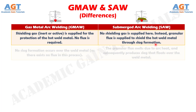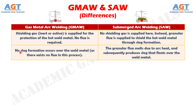Number 2: In gas metal arc welding, no slag formation occurs over the weld metal, as there exists no flux in this process. Whereas in submerged arc welding, the granular flux melts due to arc heat and subsequently produces slag that floats over the weld metal.